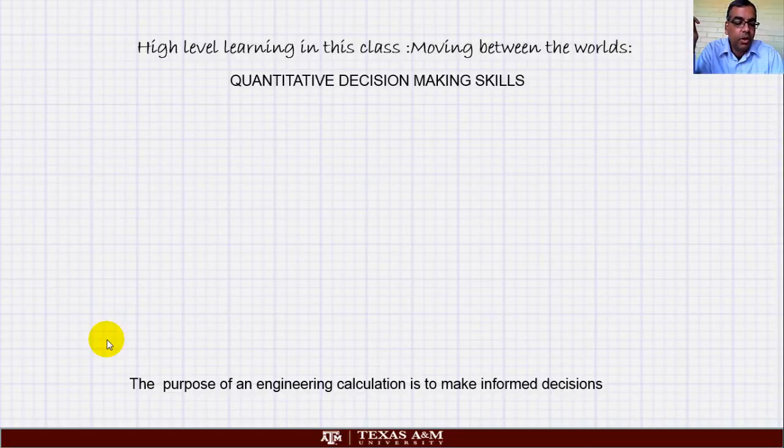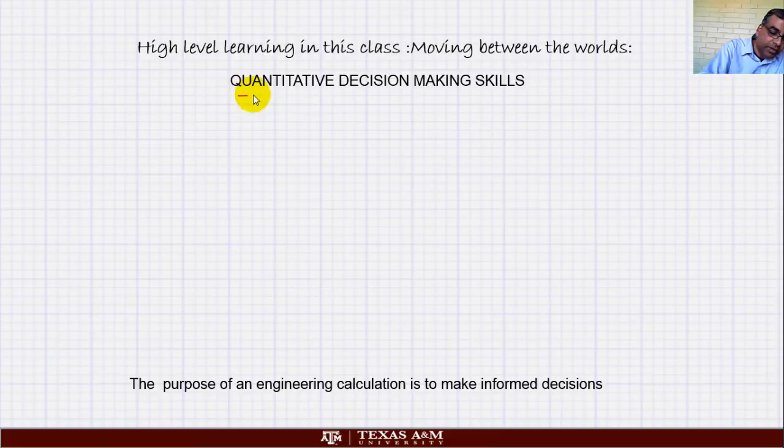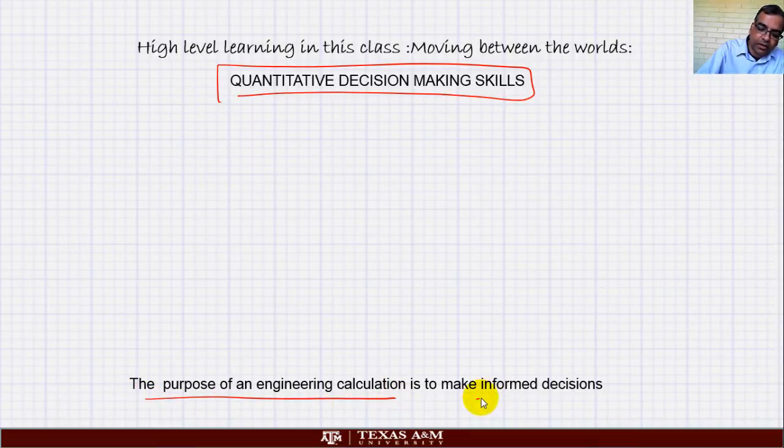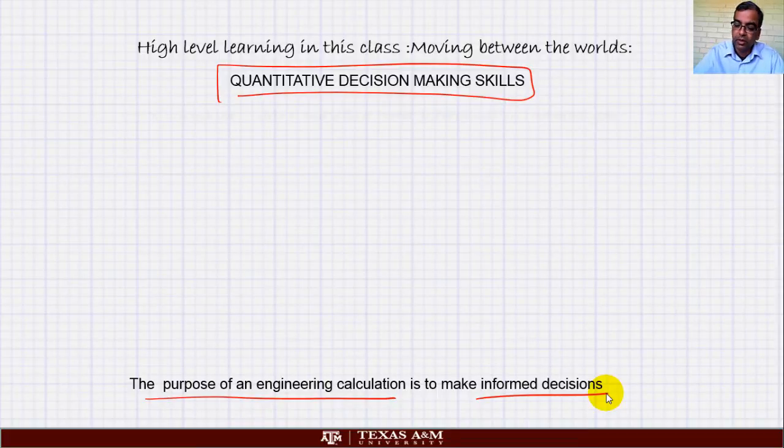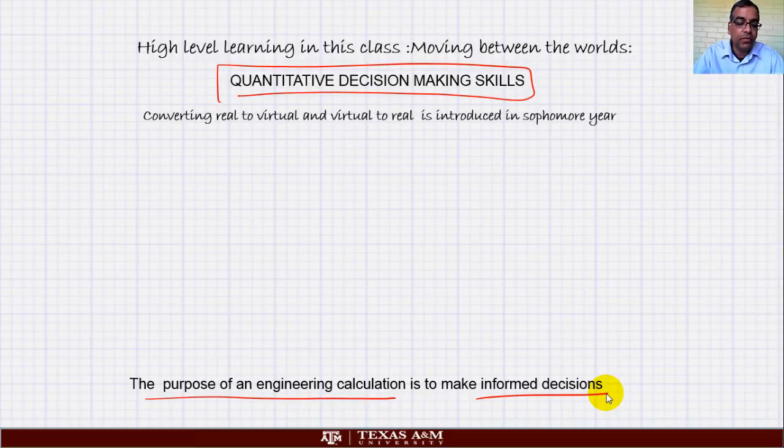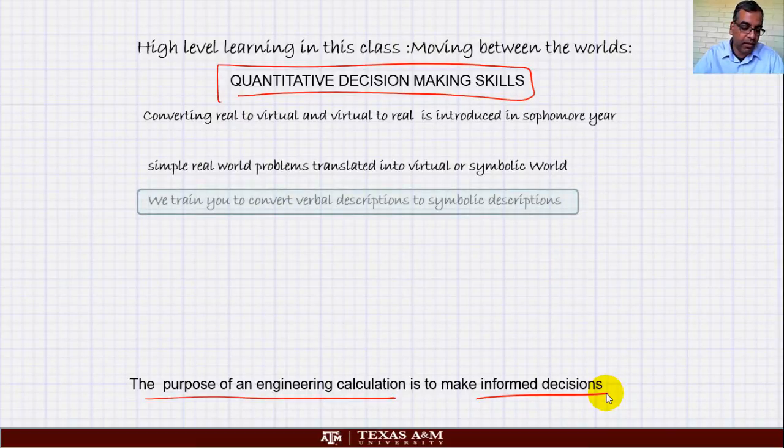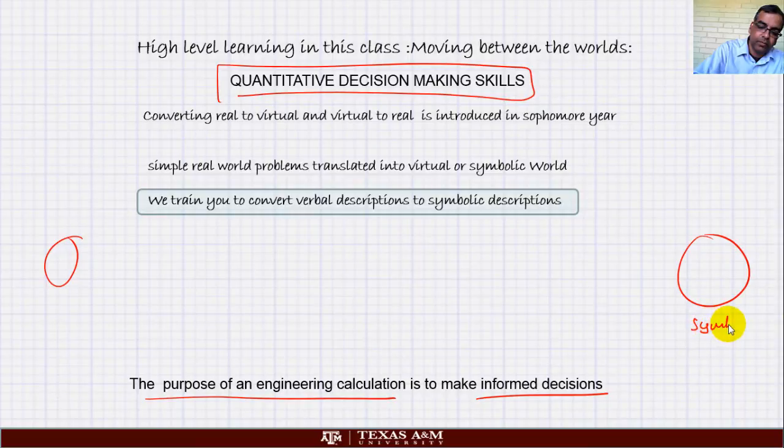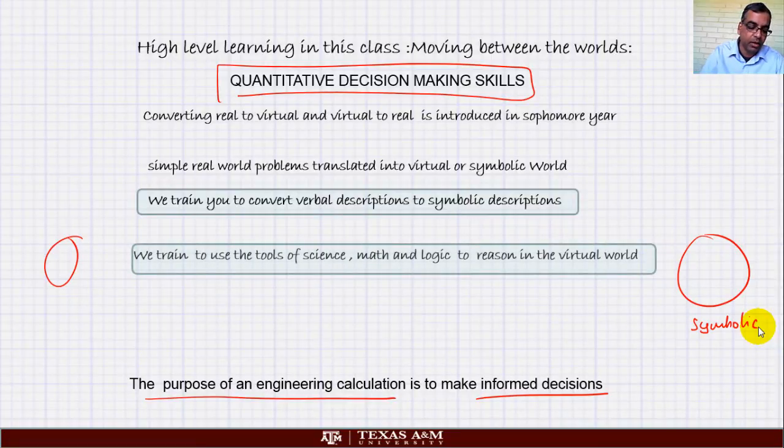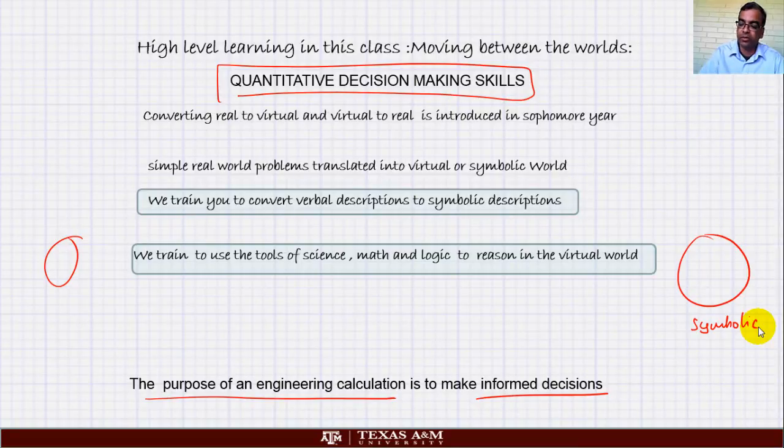So what's the high level thinking skill that we learn in this class? It is moving between the worlds, how do you move from one of these words to the other, and quantitative decision making. Which means you have to realize that the reason why we do an engineering calculation is to make an informed decision. So every number that you calculate has a decision behind it. Converting numbers into decisions is a very key aspect of engineering. Converting real to virtual world and virtual to real. The core idea is how to convert verbal, which is the real world example, into virtual world, that is symbolic. Converting verbal to symbolic is a very critical thing.